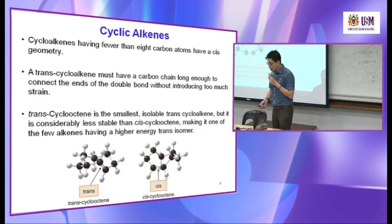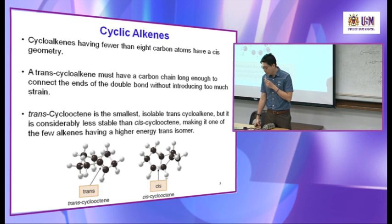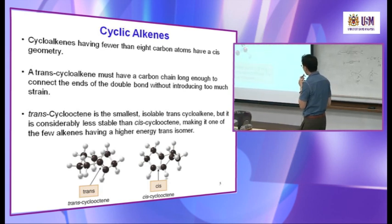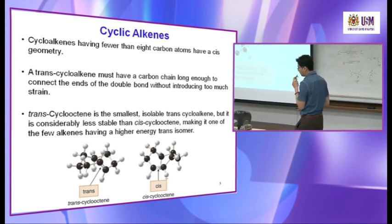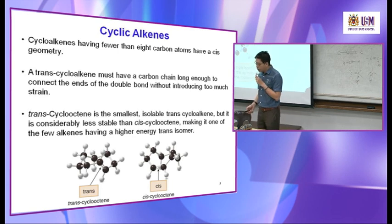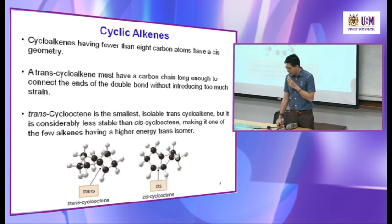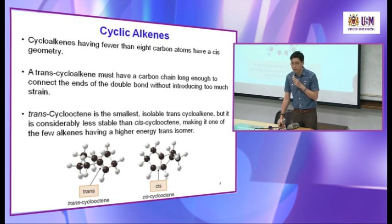The carbon chain must be long enough to connect the two ends of the triple bond without introducing too much strain. Cyclooctyne is the smallest isolable cycloalkyne — cycloheptyne decomposes upon standing at room temperature after a short time because its molecular structure is too strained.